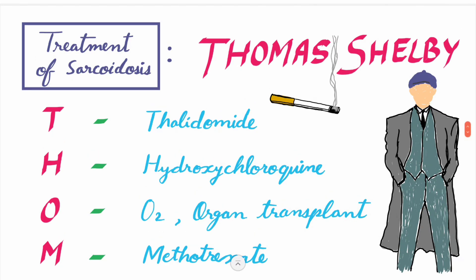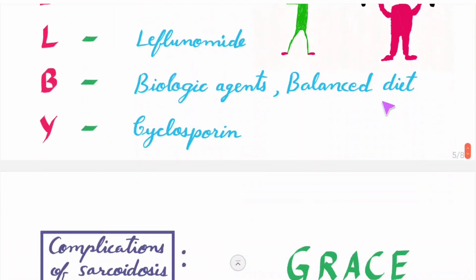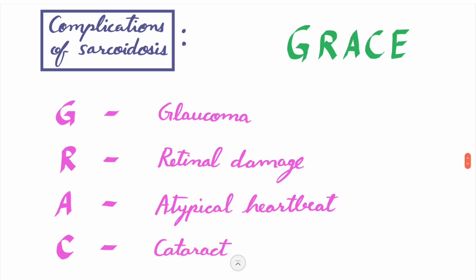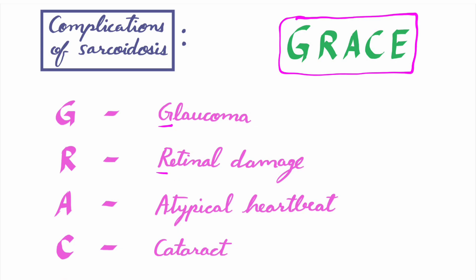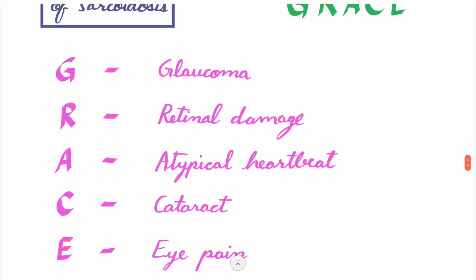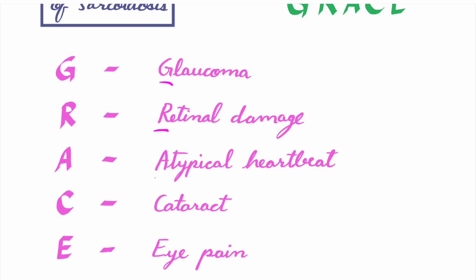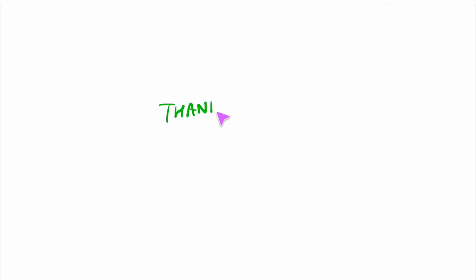Complications of sarcoidosis can be remembered by 'GRACE': G for glaucoma, R for retinal damage, A for atypical heartbeat, C for cataract, E for eye pain. Thank you guys for watching this video. I will see you in my next video with some interesting topics and fascinating mnemonics.